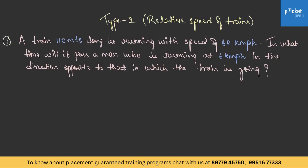Let us read the next question: A train 110 meters long is running at a speed of 60 km per hour. In what time will it pass a man who is running at 6 km per hour in the direction opposite to that of the train? The length of the train is 110 meters. We need to consider the relative speed of the train with respect to the man.